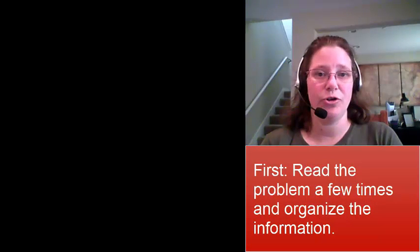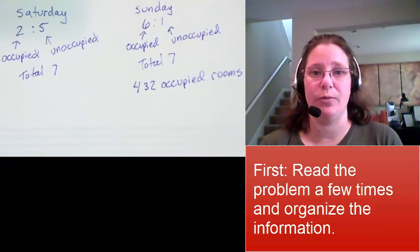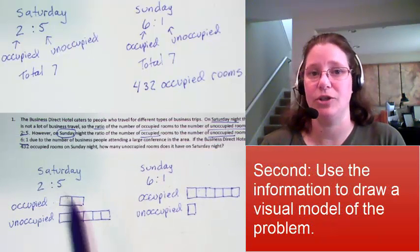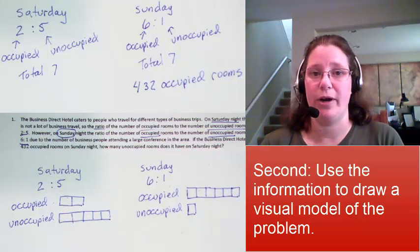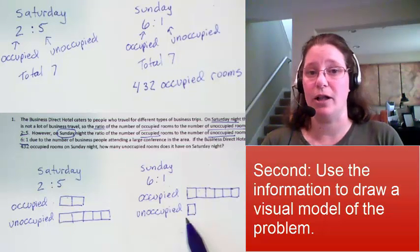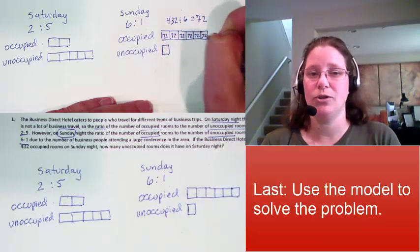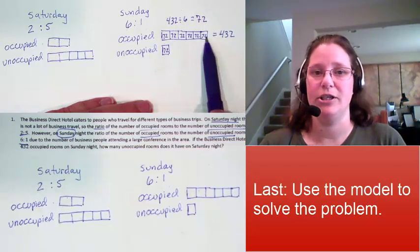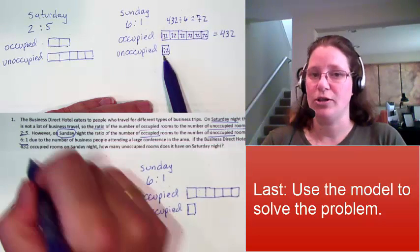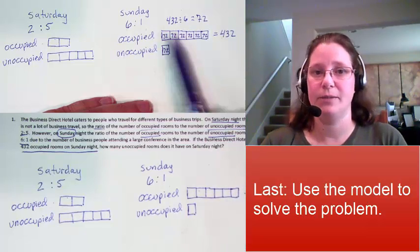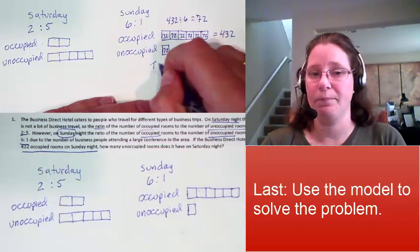Now that we've solved this problem, let's think about the steps we took. First, we read the problem very carefully to make sure we had all the information, labeled everything, and made sure we understood what it meant. Then we took that information and turned it into two tape diagrams that were related — they both had the same total number of squares because the hotel didn't change its number of rooms. After that, we solved for one piece at a time. This is probably the most complex tape diagram we'll do this year, but it's pretty easy once you get a chance to practice. Make sure you watch this video again, note down any questions, and we'll practice more tomorrow.